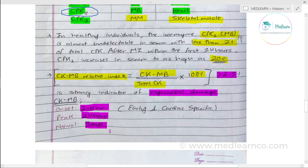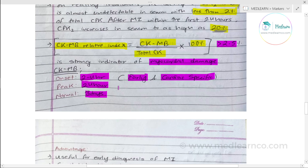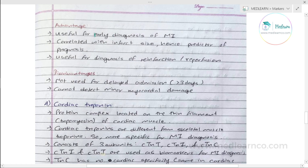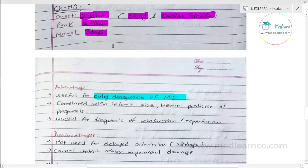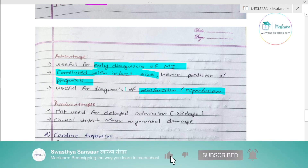CK-MB is relatively early and cardiac specific. The advantages are: it can be used for early diagnosis of MI with onset at 2–4 hours; it can be correlated with infarct size to predict prognosis; and it is used for diagnosis of re-infarction.